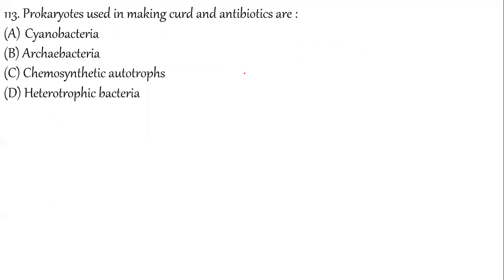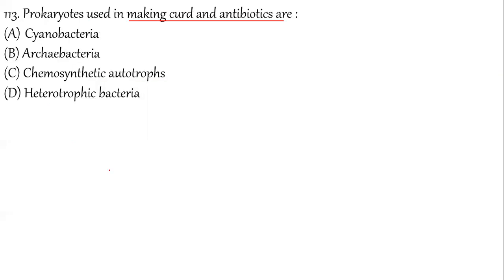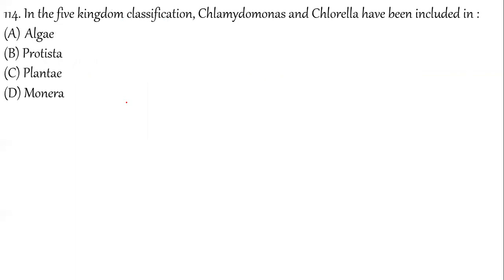Question 113: Prokaryotes used in making curd and antibiotics are? Heterotrophic bacteria are helpful in making curd from milk and in the production of antibiotics. The correct answer for question 113 is option D — heterotrophic bacteria.